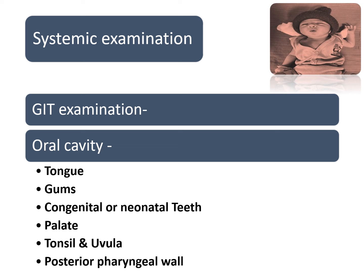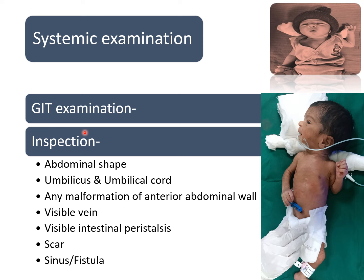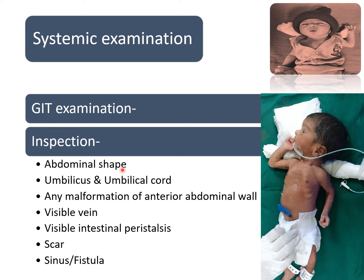After oral cavity inspection in GIT examination, we should see the abdominal shape, then the umbilicus, umbilical cord, and cord clamp. Any malformation of the anterior abdominal wall if present, any visible veins, any visible intestinal peristalsis, or any scar, sinus, or fistula.